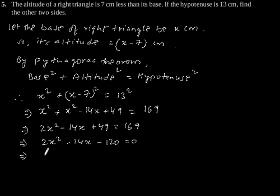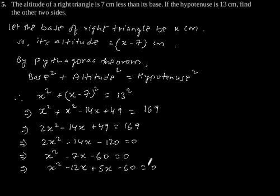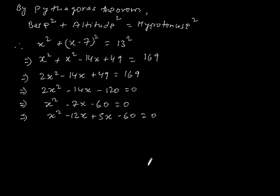Which implies x square minus 7x minus 60 is equal to 0. Now by factorization method we will get x square minus 12x plus 5x minus 60 is equal to 0. So taking x common, x into x minus 12 plus 5 into x minus 12 is equal to 0.